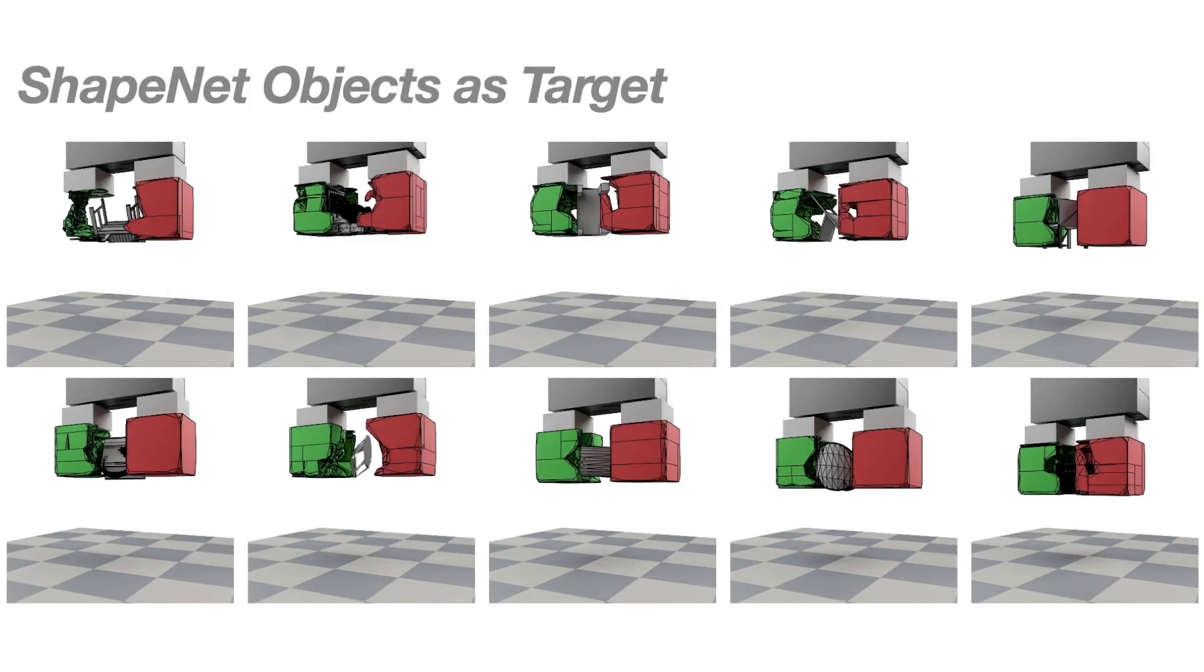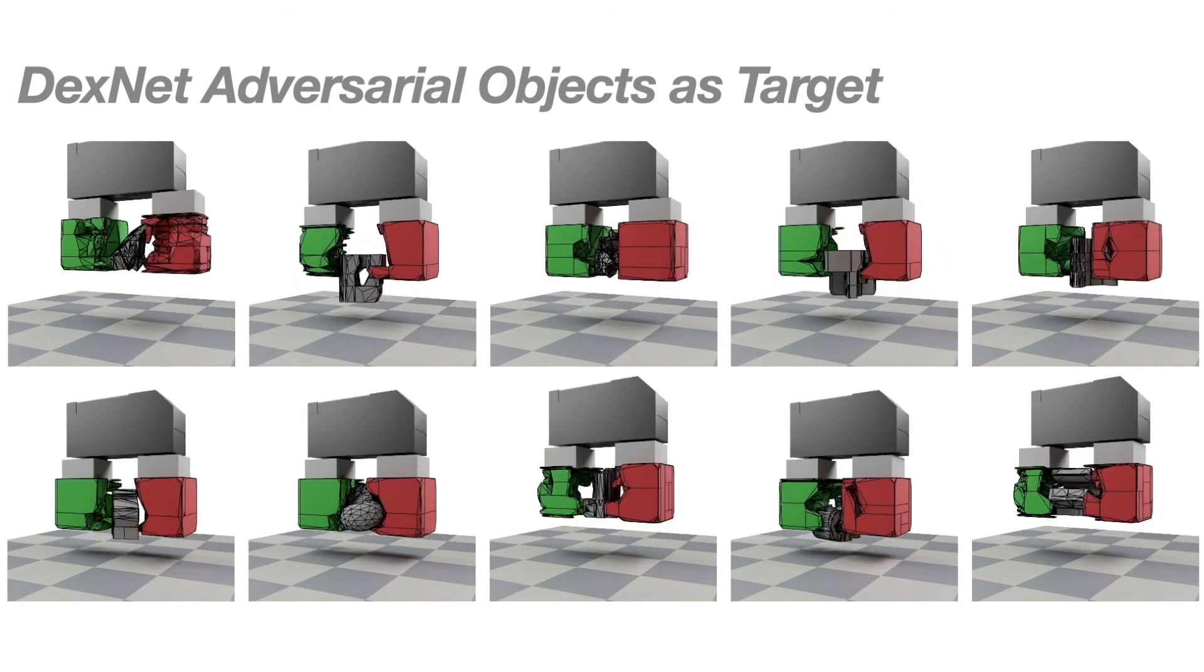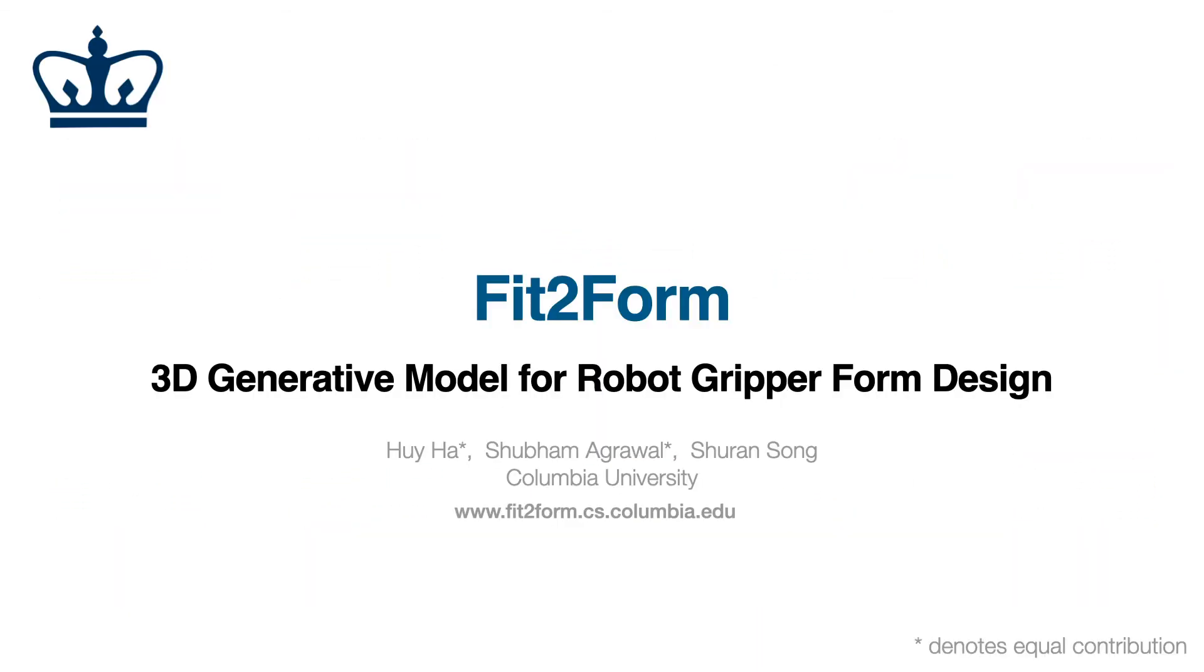Finally, we show more generated grippers for ShapeNet objects and for adversarial objects. Thanks for watching.